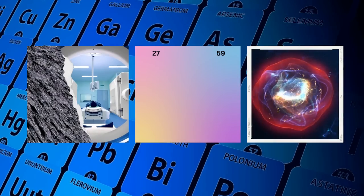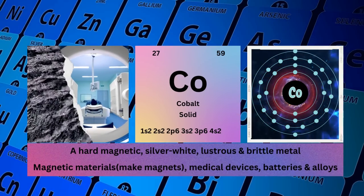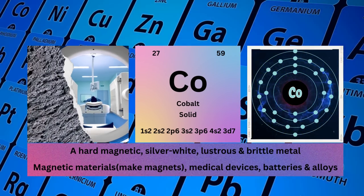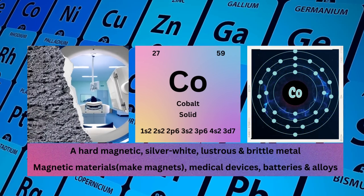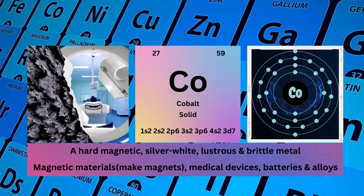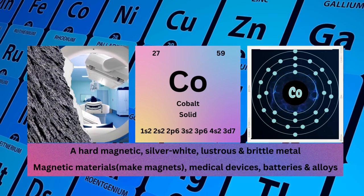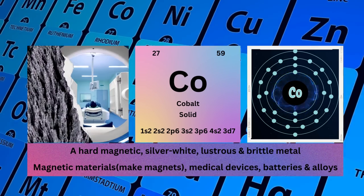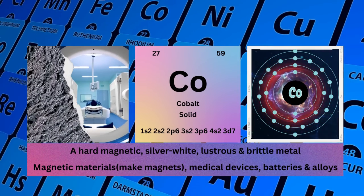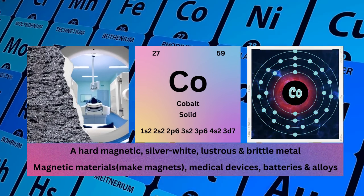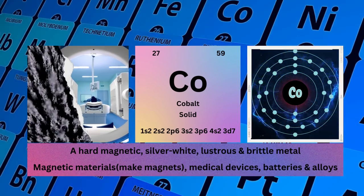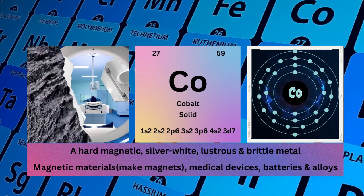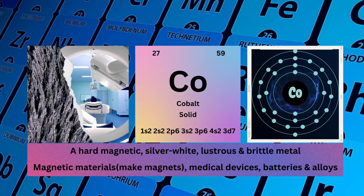Cobalt. Atomic No. 27. Mass No. 57. Symbol Co. State Solid. Electronic Configuration 1S2 2S2 2P6 3S2 3P6 4S2 3D7. Physical Properties: A Hard, Magnetic, Silver-White, Lustrous and Brittle Metal. Cobalt is used for magnetic materials, making magnets, medical devices, batteries, and alloys.